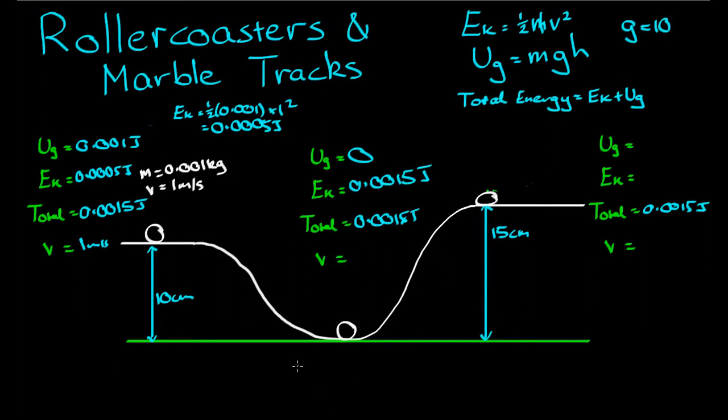And from that we can work out the speed. Ek is equal to a half mv squared. So 0.0015 is equal to a half times 0.001 times v squared. So 0.0015 divided by 0.0005, and then taken to the square root, v comes to 1.73 m per second. Is that a sensible answer? That's roundabout, by the way, that's just approximate.